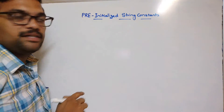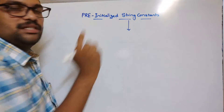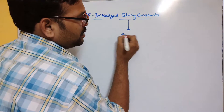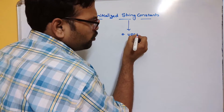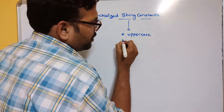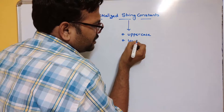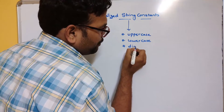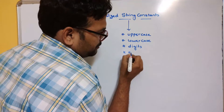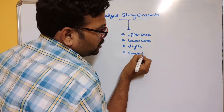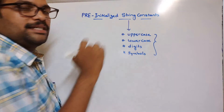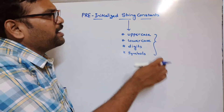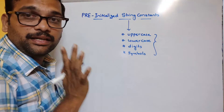The name itself indicates this is with respect to strings. A string contains uppercase characters, lowercase characters, numerical characters like digits, and symbols. We call all these things characters, and a group of characters we commonly call a string.